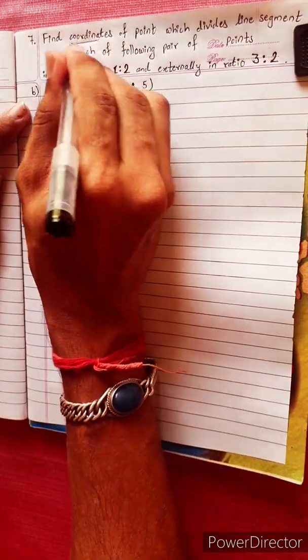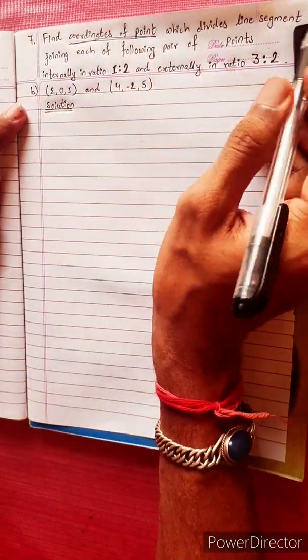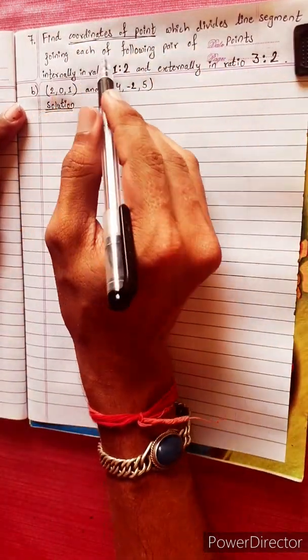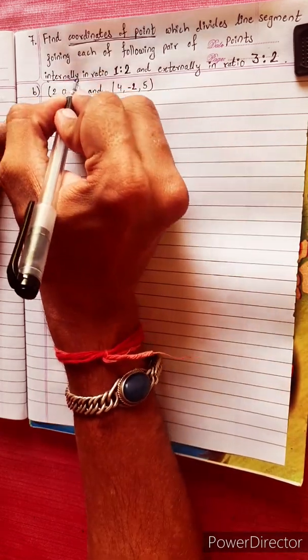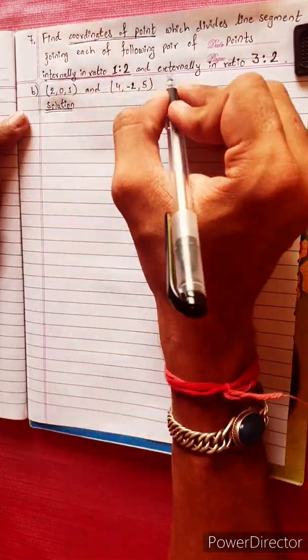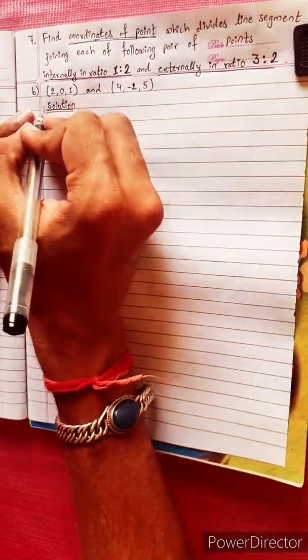Find the coordinates of the point. The coordinates of the point will be given. Divide the line segments joining each pair of following points: internally in ratio 1 is to 2, and externally in ratio 3 is to 2.